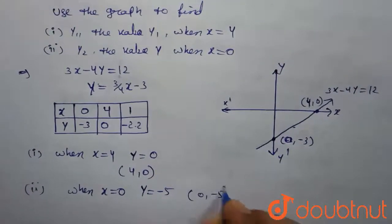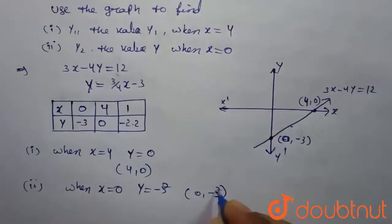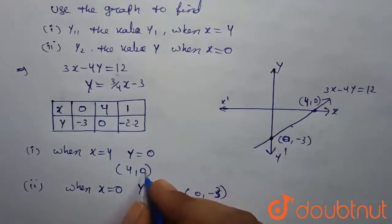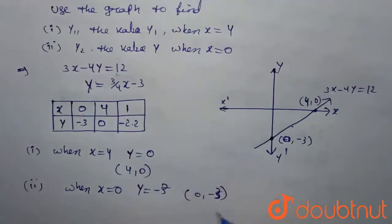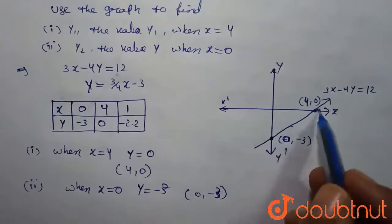0, minus 3 and 4, 0 are the points. We have found these two points in the graph.